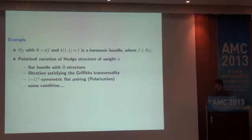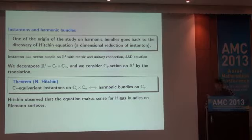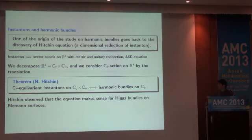As I've explained, there are a lot of harmonic bundles, but in general it is not easy to describe them. Let me mention some historical things. One of the origins of the study of harmonic bundles goes back to the discovery of the Higgs equation as a dimensional reduction of instantons. Instantons are self-dual bundles on four-dimensional Euclidean space with metric and with unitary connection satisfying a nonlinear partial differential equation called the ASD equation. It is very important in both mathematics and physics.